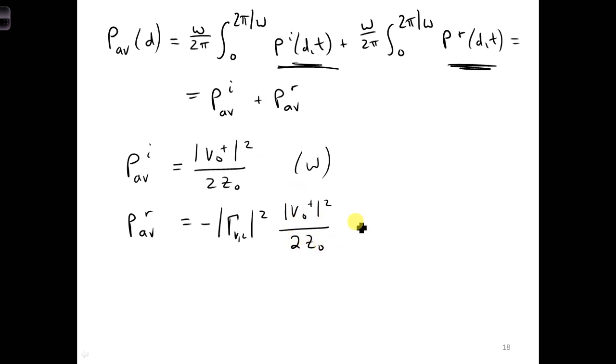Which if you compare these two, you can see that the only difference is that this is multiplied by the reflection coefficient squared with a minus sign, P average incident. So we can plug this in right there, multiply by the reflection coefficient of magnitude squared, and we get the reflected time average power.